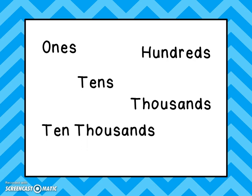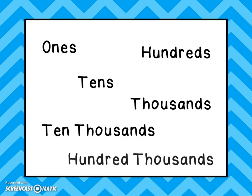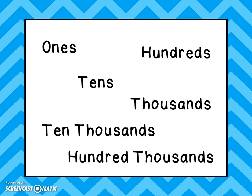We have the ten thousands place, and we have the hundred thousands place. So: ones, tens, hundreds, thousands, ten thousands, and hundred thousands.